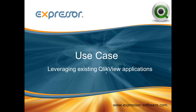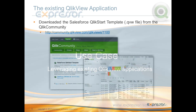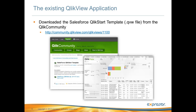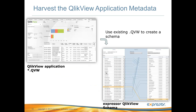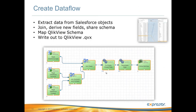The demonstration use case I prepared will focus on the value of Expressor's ClickView integration by demonstrating how you can leverage existing work that has already been created with ClickView. Using a previously prepared Salesforce QVW template downloaded from the ClickCommunity website, I will use Expressor to extract its field metadata and create a ClickView schema. I will then create an Expressor data flow using Salesforce read operators to pull records from the case, account, and contact Salesforce objects. I will merge them together and enrich, cleanse, and calculate new fields using the transform operator, then write the final records to a ClickView file using a ClickView write operator.